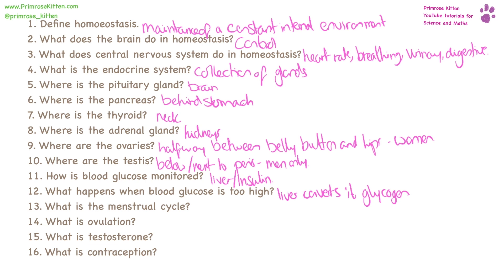What is the menstrual cycle? This happens each month. In women it's a build up and release of blood in the uterus. What is ovulation? That is when an egg is released.